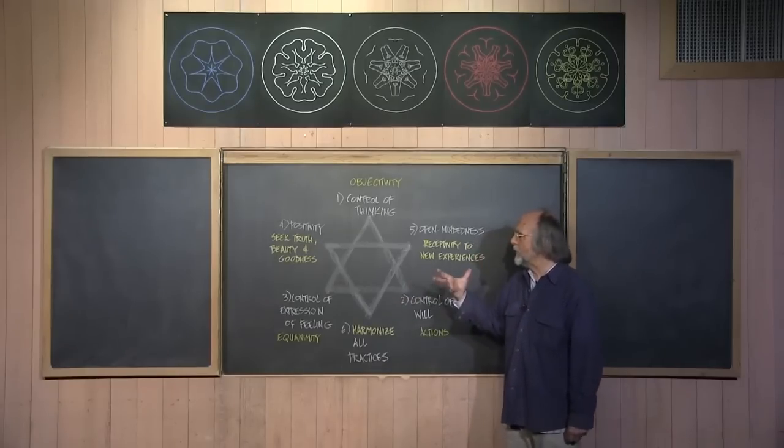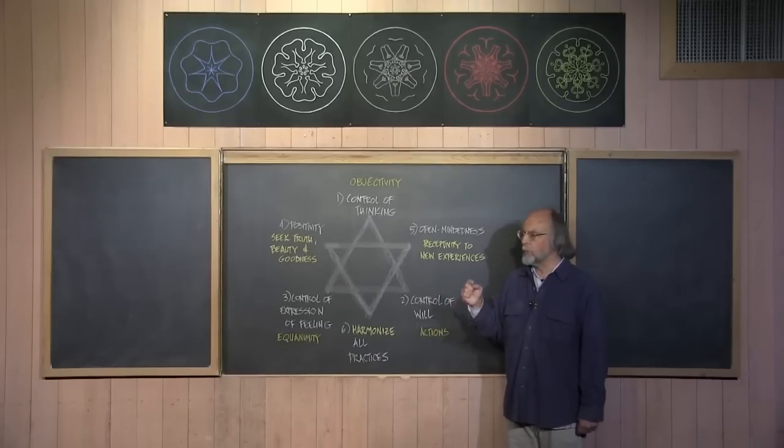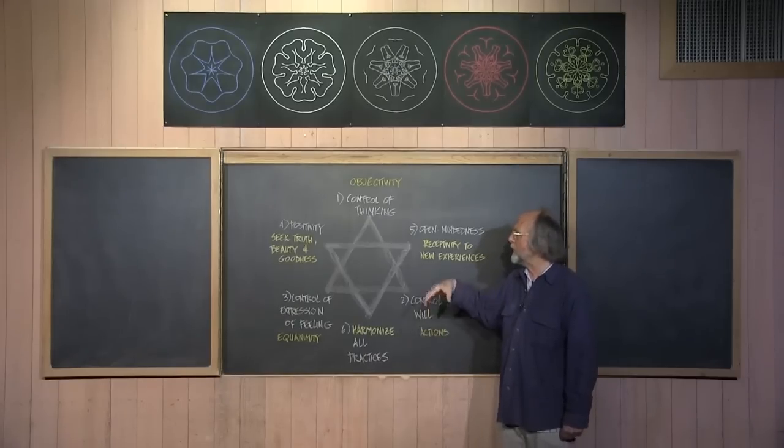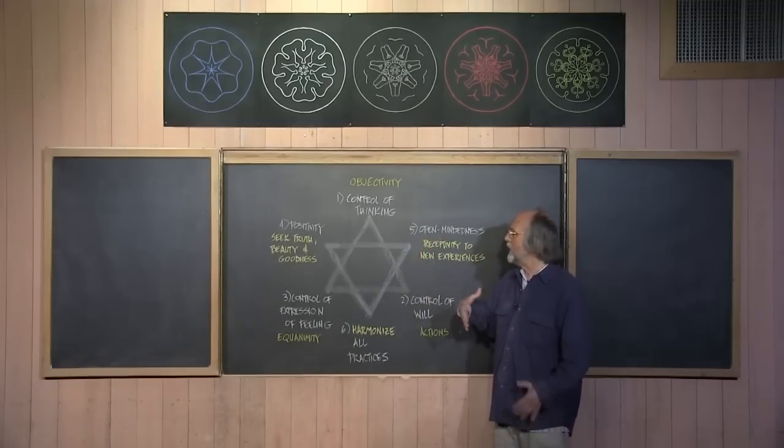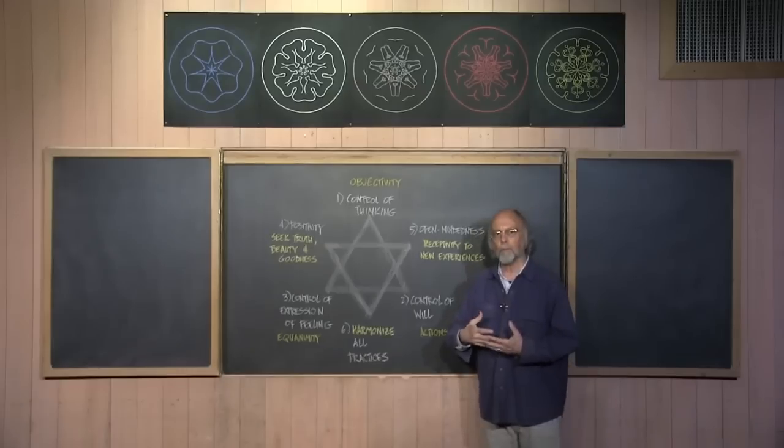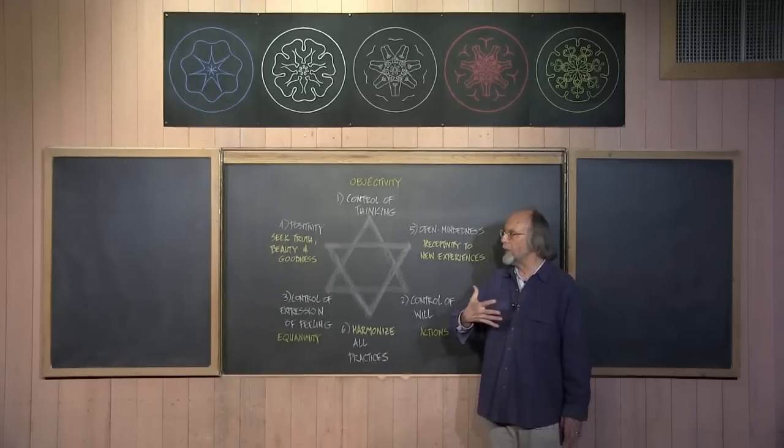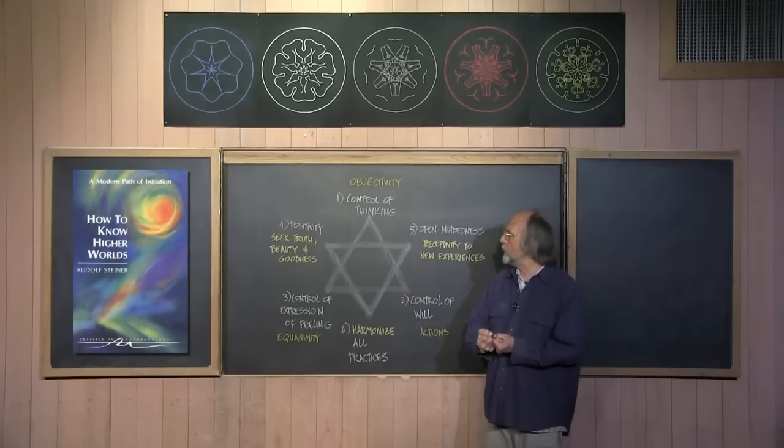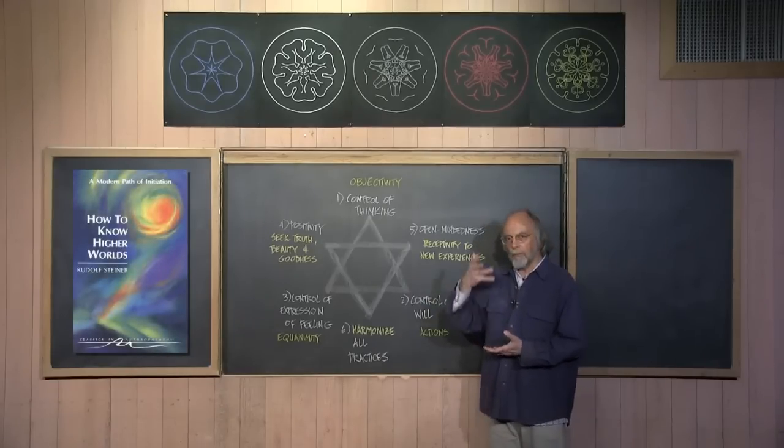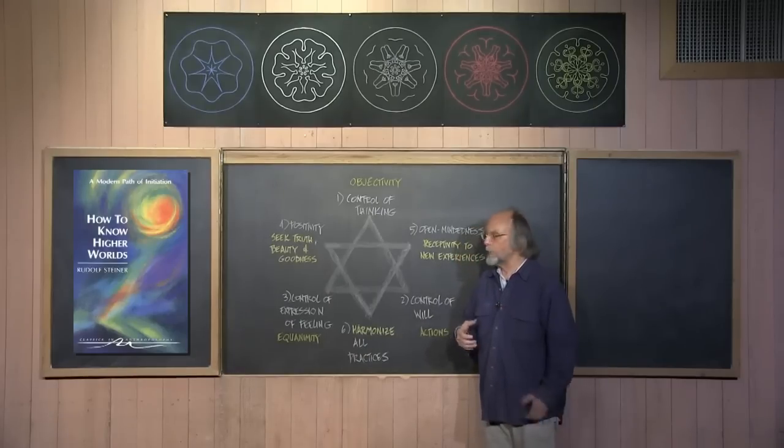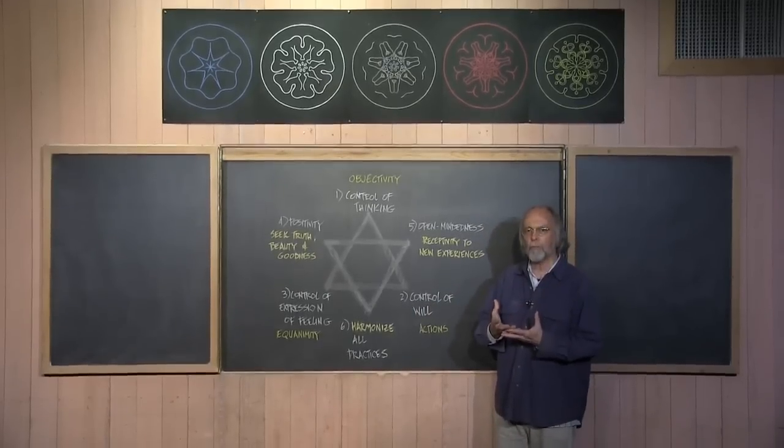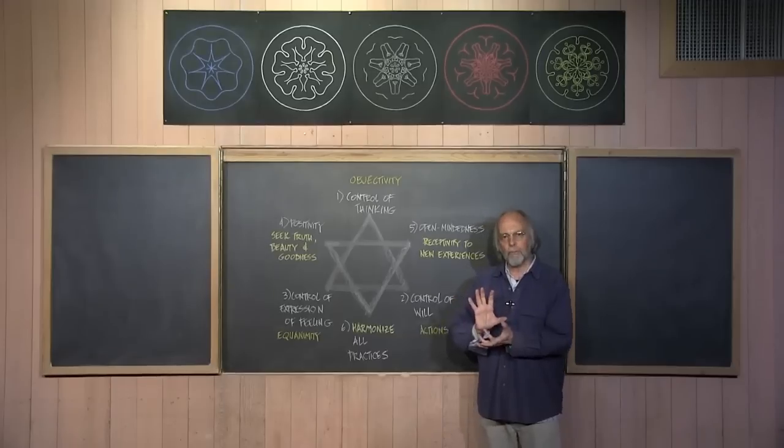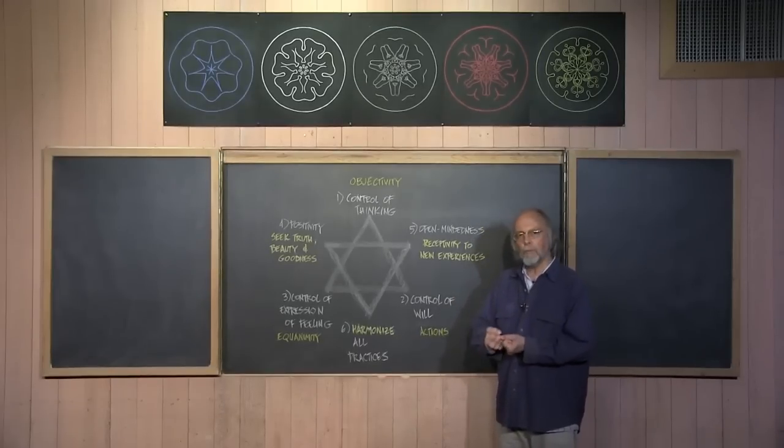He said of these exercises, he called them basic or essential because he said whatever spiritual practice we're doing, we need to back it up with these particular six activities, because these six activities will complete the forming of the heart chakra, which is a 12-petaled organ in the astral body in the region of the heart. Six of the petals of the heart chakra are formed, and six of them are latent, unformed, and they need to be formed by the free human being.